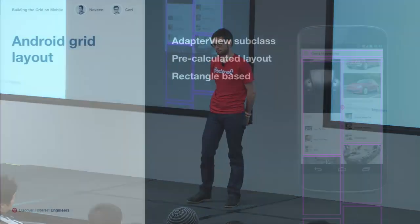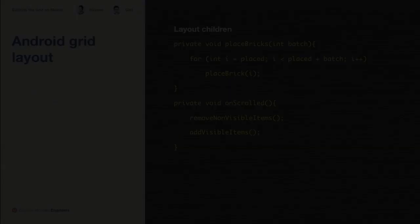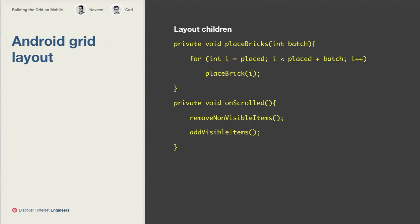Here's some code. At its core, we have this method — place bricks. You pass in a batch, loop through it, and place each brick. When you scroll, you want to remove non-visible items and add the ones that should be visible. This is simple rectangle collision detection: your main rectangle is your viewport, and you check all the little rectangles for each item to determine whether they should or shouldn't be on screen.